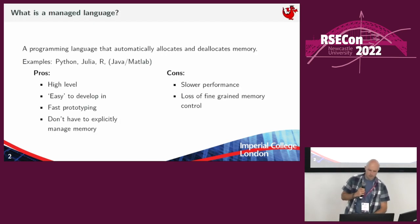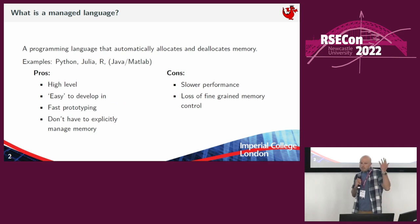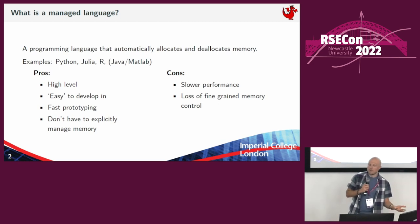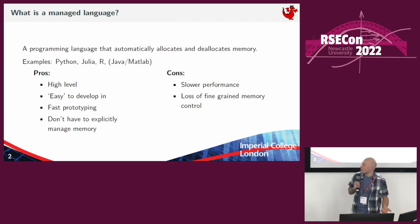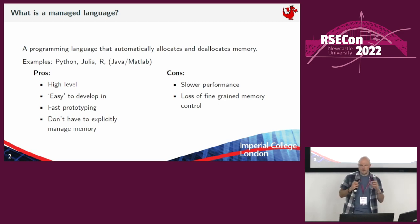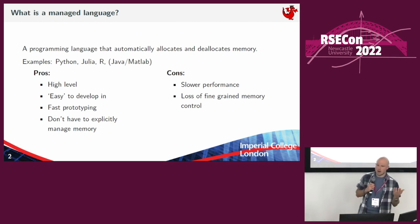Starting with managed languages — a programming language that is automatically allocating and deallocating memory for you. A few examples: popular ones are Python, Julia, R, MATLAB, Java — these sorts of things. These are what we call a managed language.